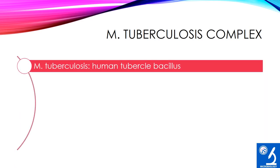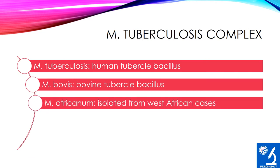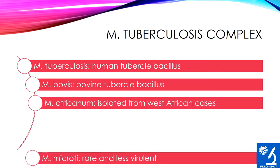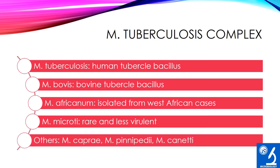The first and most important member of the Mycobacterium tuberculosis complex is Mycobacterium tuberculosis, responsible for tuberculosis in humans. Then Mycobacterium bovis, also known as bovine tubercle bacillus. Then Mycobacterium africanum, isolated from West African cases. Then Mycobacterium microti, which can cause rare and less virulent cases. Others include Mycobacterium caprae, Mycobacterium pinnipedii, and Mycobacterium canettii.